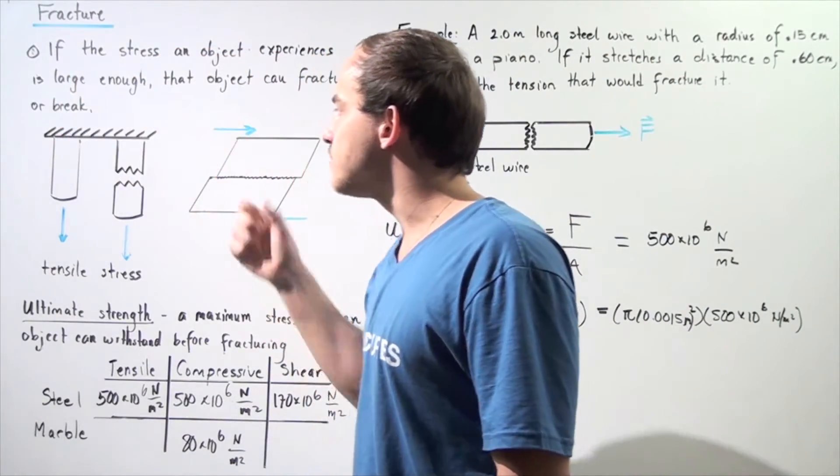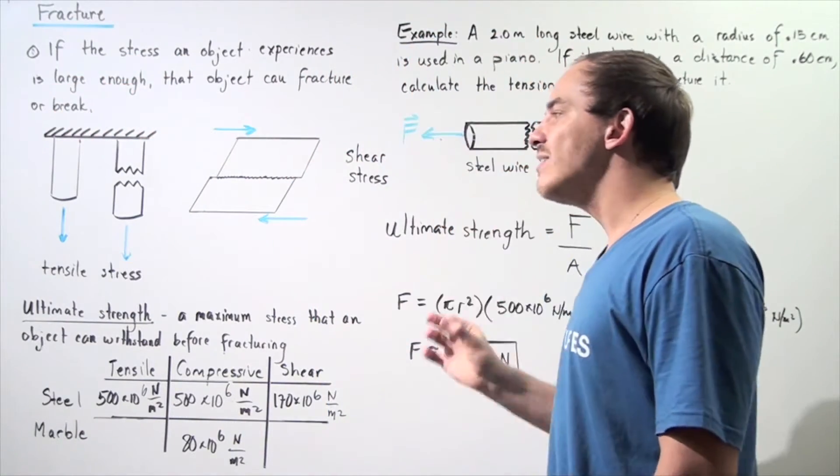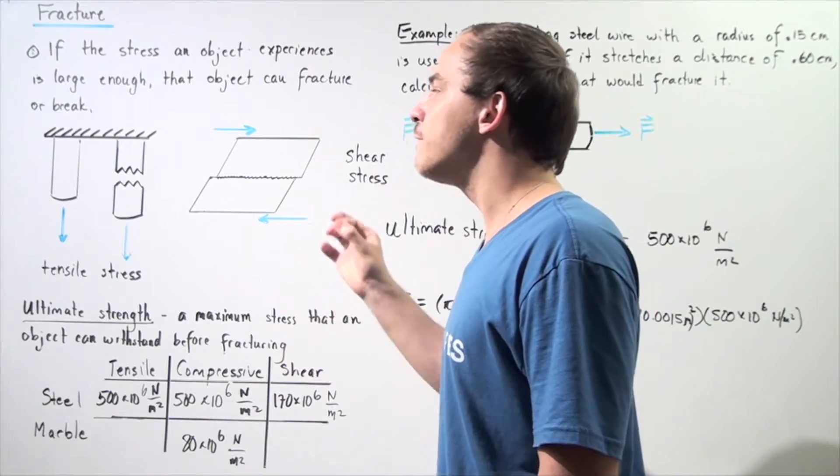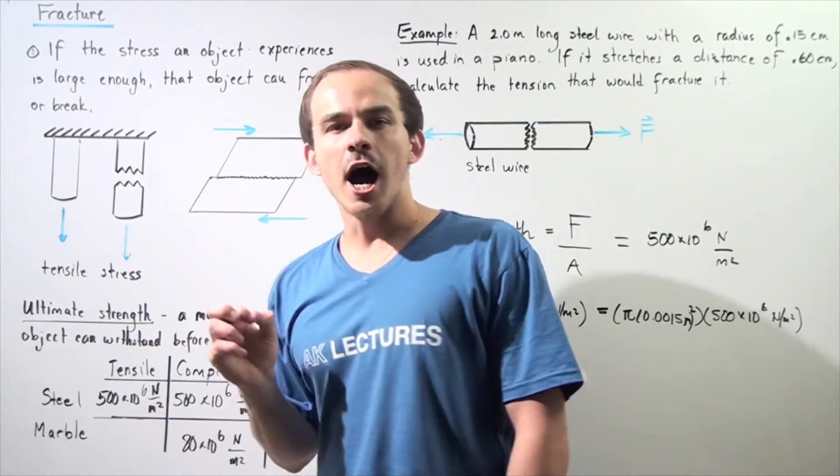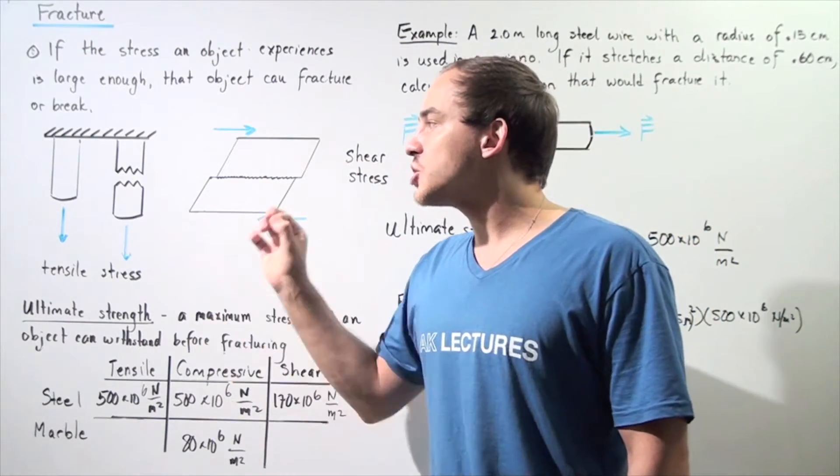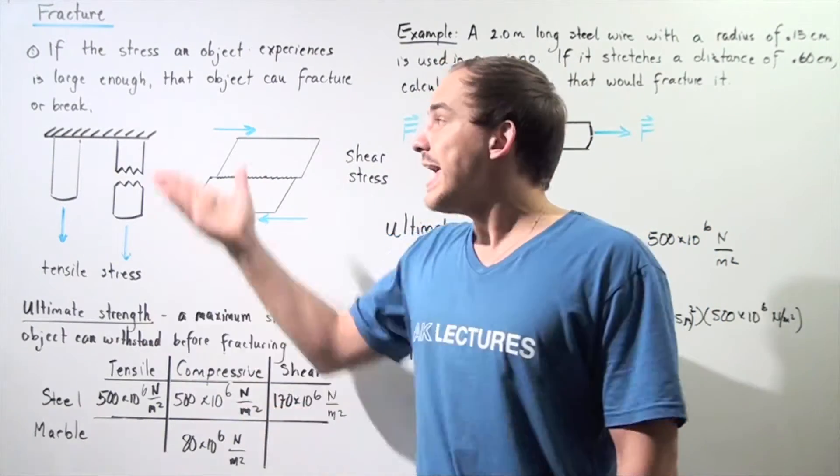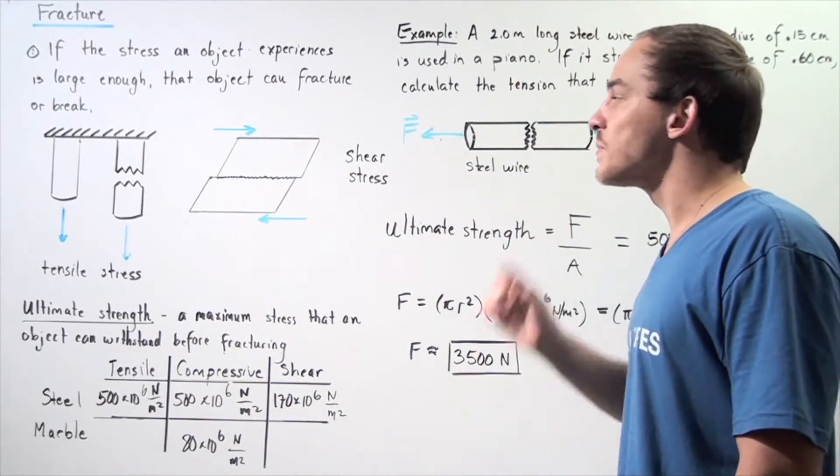For example, if we have the following solid column that is hanging off of the ceiling and we apply a tensile force which creates a tensile stress within that object and the stress is high enough, that object will break, will fracture into two or more pieces, in this case into two pieces.